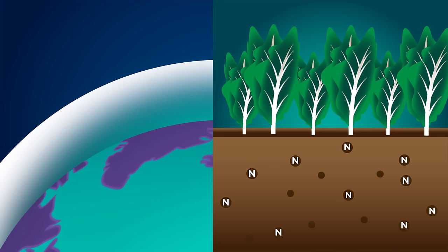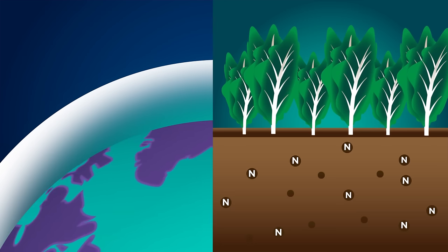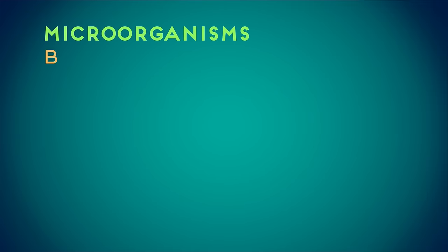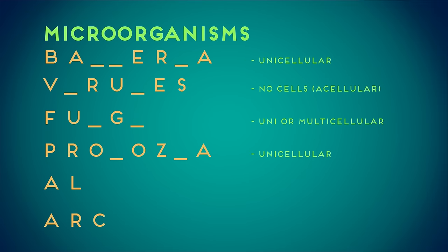In this video we are going to look at a few of them and what they do, both good and bad. Microorganisms divide into 6 main groups. Can you fill in the missing letters to work out what they are? Pause the video and have a think. Did you get them all?